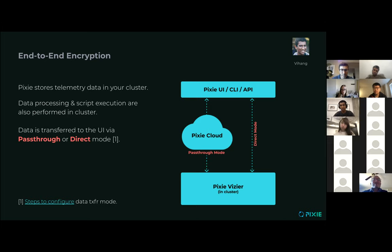No matter which of these two data transfer modes you use, all of these connections still use TLS — so the data is always point-to-point encrypted in transit. However, even in this scenario, it is still possible that you might want to use Pixie Cloud for the convenience but be running a Pixie Cloud instance in an environment you don't fully trust. We really wanted to address the scenario where you're using pass-through mode with Pixie Cloud — you like that convenience, but you still want to protect your data in transit. So to address that, we decided to work on end-to-end encryption.